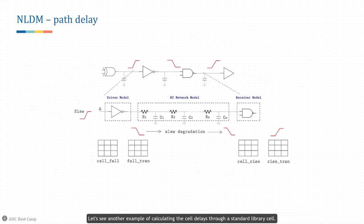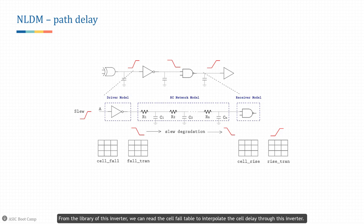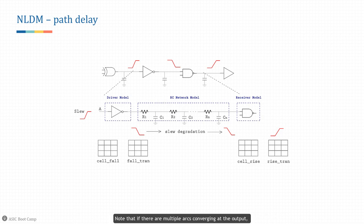Let's see an example of calculating cell delays through a standard library cell. Assuming there is a rising signal transition at the input of the inverter — since its output will be falling, it is a negative unate arc. From the library of this inverter, we can read the cell fall table to interpolate the cell delay through this inverter. We can also derive the output falling transition time from the fall transition lookup table. Note that if multiple arcs converge at the output, the worst transition time among all arcs will be picked for subsequent calculation.